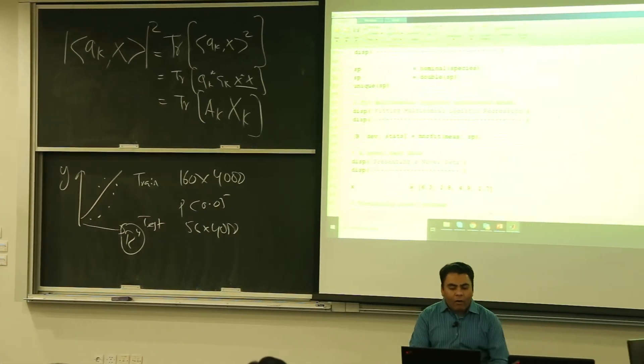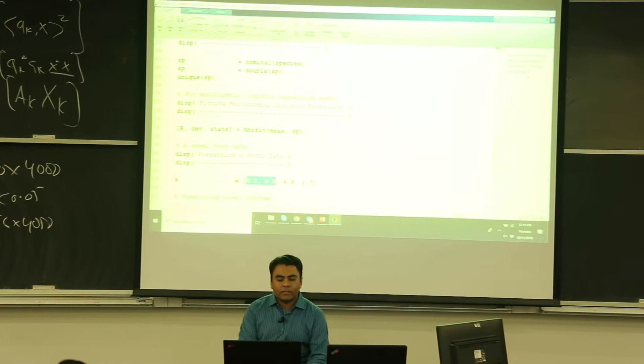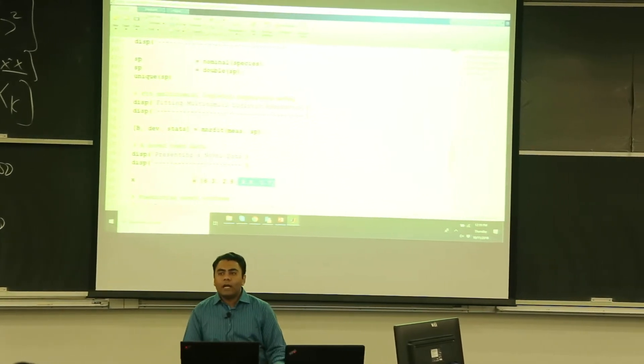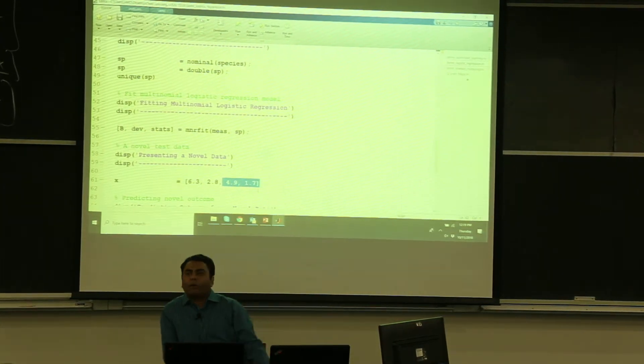Now what I'm trying to do, now I have this novel data set. It is saying that these are the sepal dimensions and these are the petal dimensions. Based on these dimensions, tell me which species does the sample belong to.